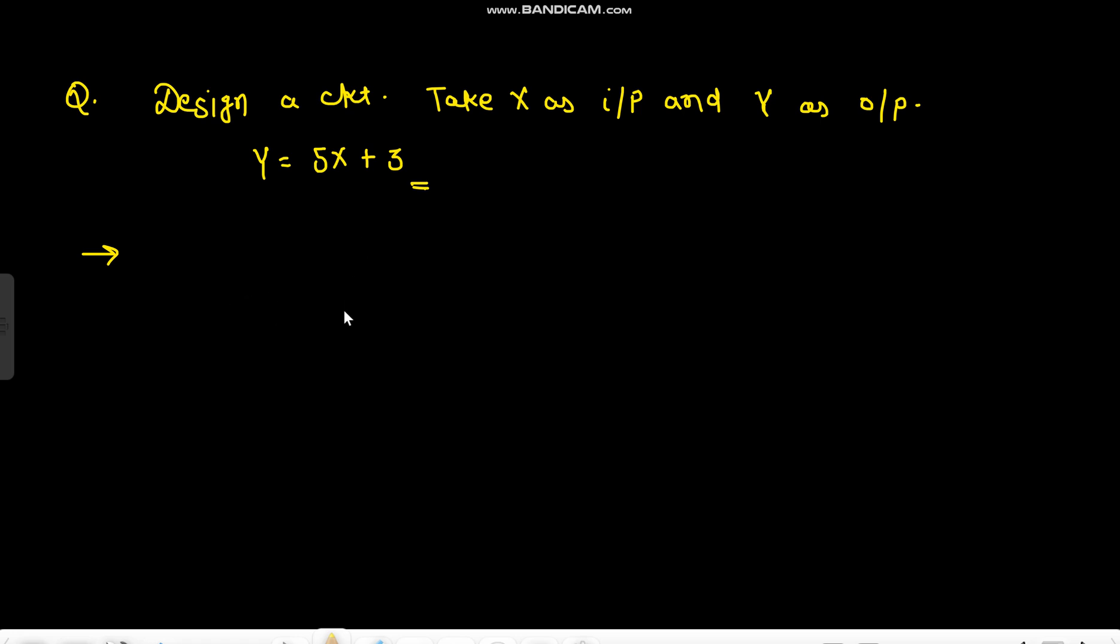Using op-amp we can design it. Look, we want the output to be positive, so what we will do is we will never use inverting operation, we will always use non-inverting configuration. First what I will do is I will use a non-inverting amplifier of gain 5, that's 4R and R, and apply only the input X.